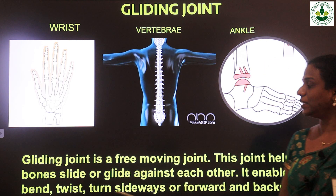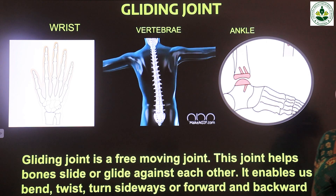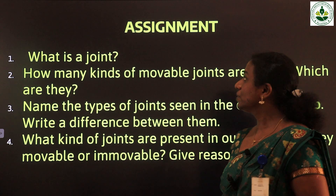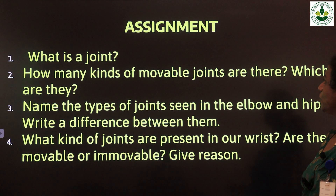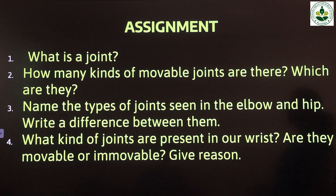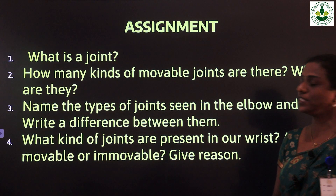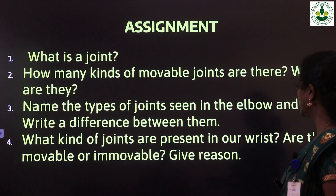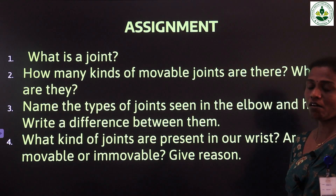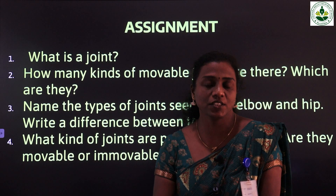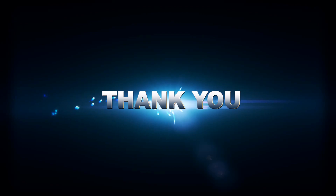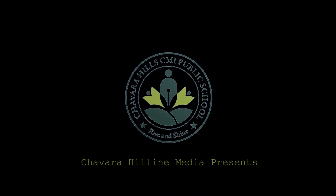Next is the assignment. First question: what is a joint? Second question: how many kinds of movable joints are there, and which are they? Third: name the types of joints seen in the elbow and hip, and write a difference between them. Fourth: what kind of joints are present in our wrist — are they movable or immovable? Give a reason. Find out the answers, read and study the lesson, and we will see you in the next class. Thank you.